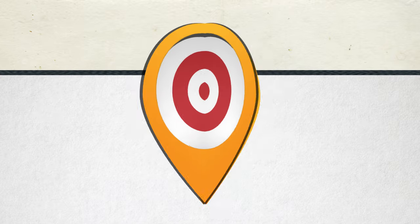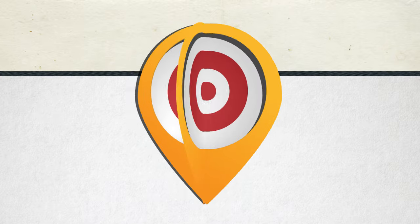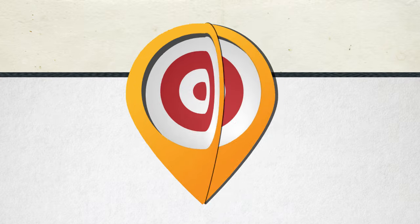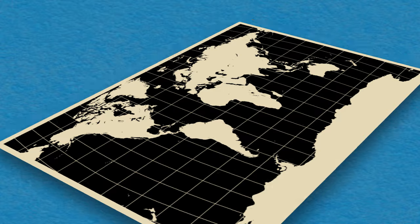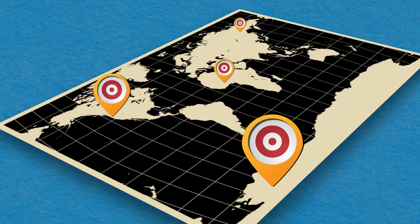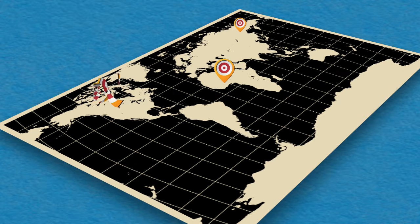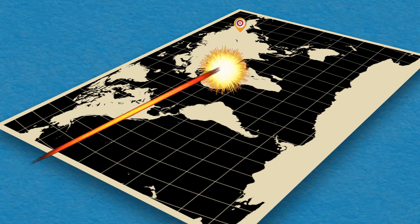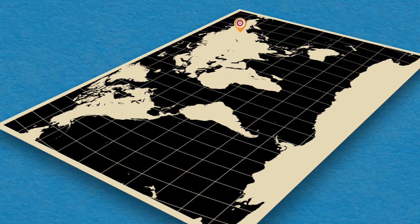So far, this seems super confusing. However, Fitts' Law is easy to understand. Fundamentally, it proves that it's faster for you to hit larger targets that are closer to you than it is to hit smaller targets that are farther away from you.